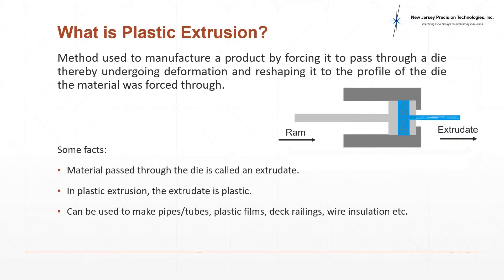Plastic extrusion is a manufacturing method that involves forcing heated plastic through an opening in a die which deforms and reshapes it into a desired profile. The material that passes through the die is known as an extrudate.